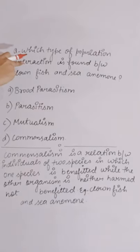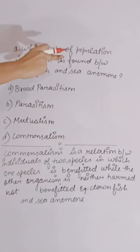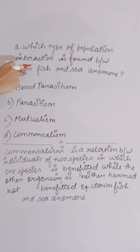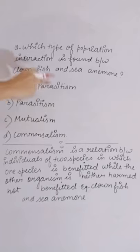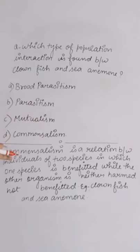Which type of population interaction is found between clown fish and sea anemone? These are the options.